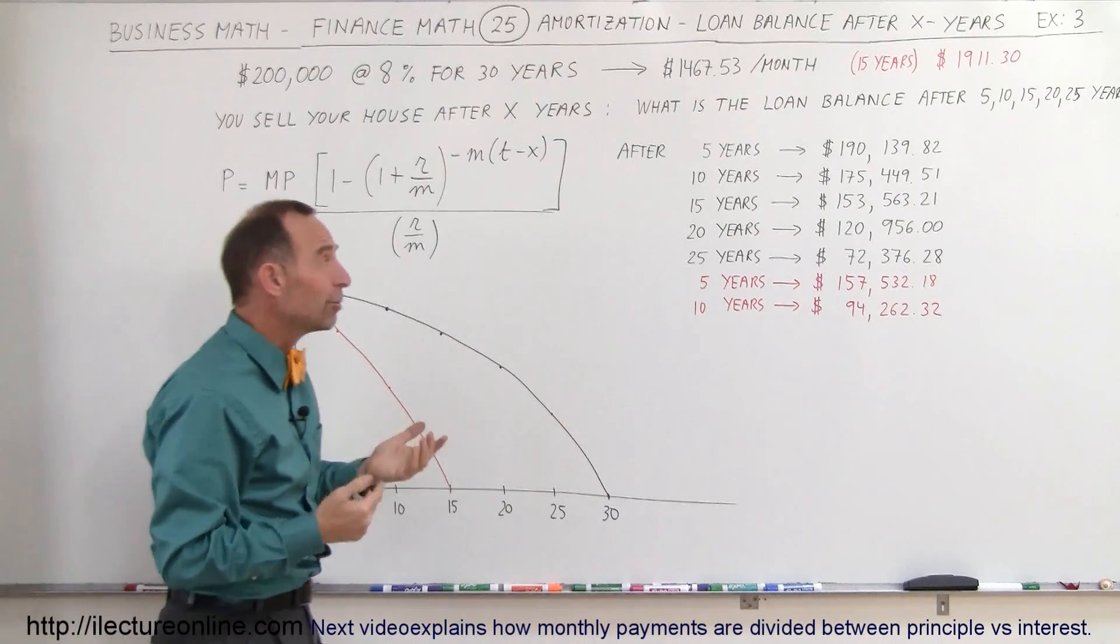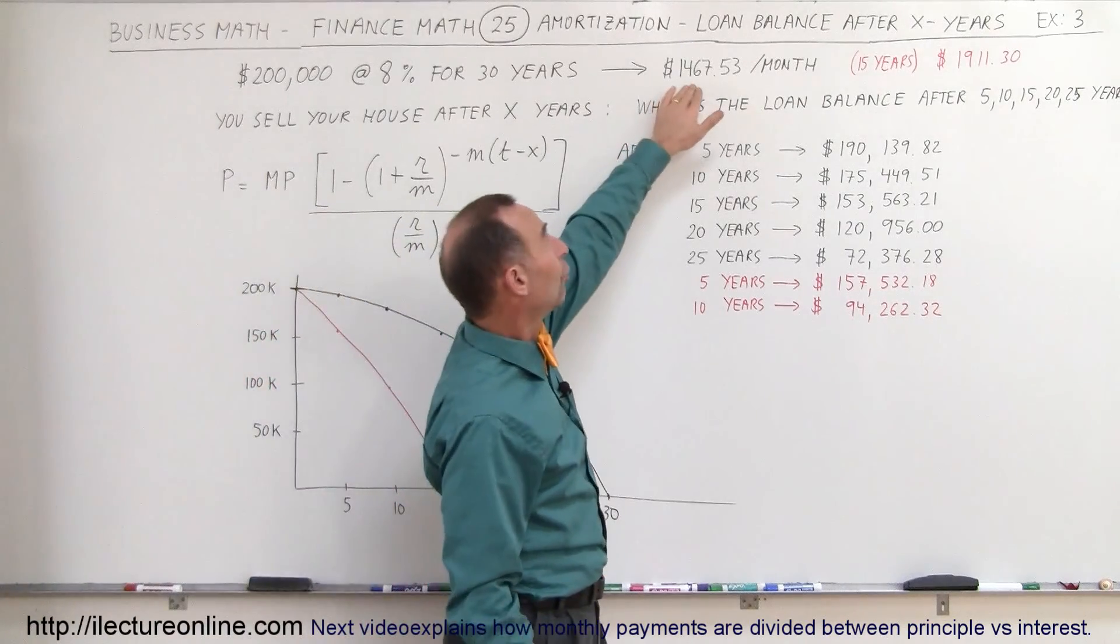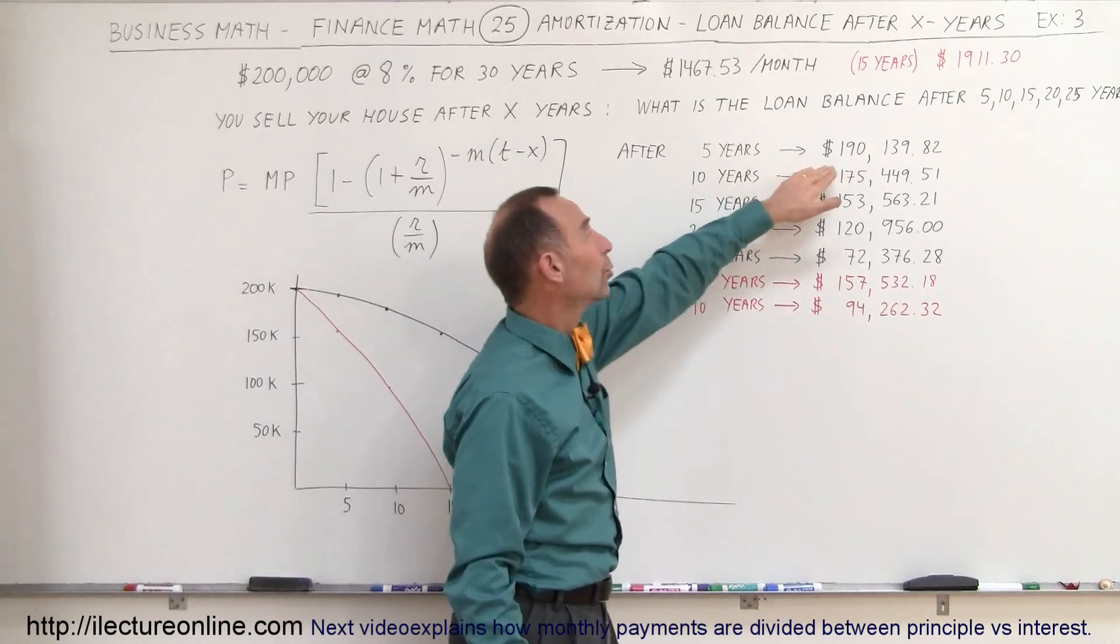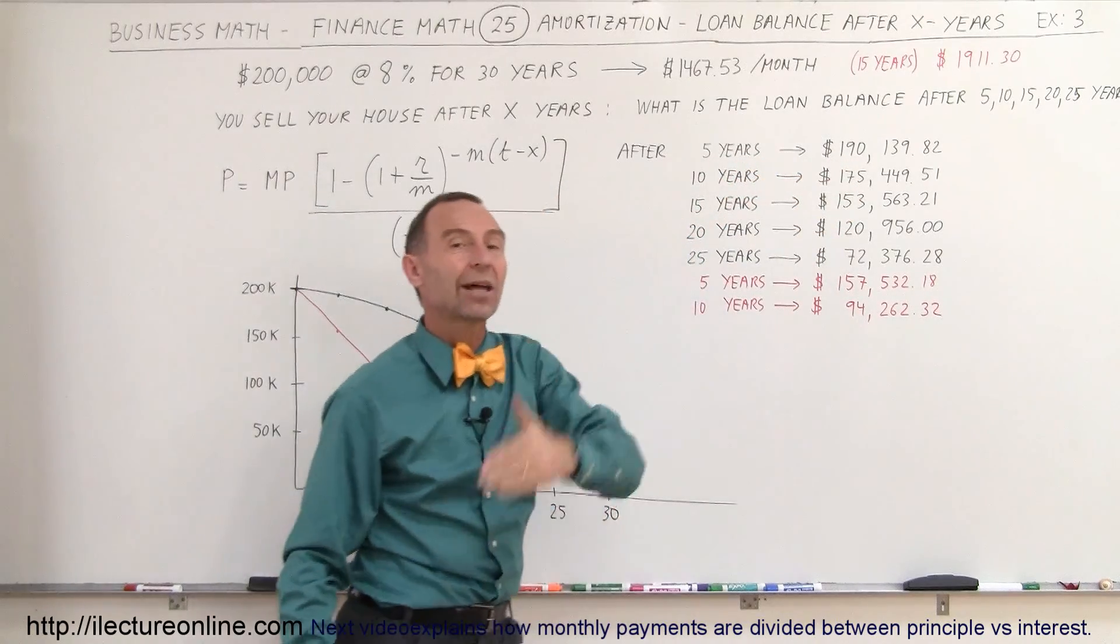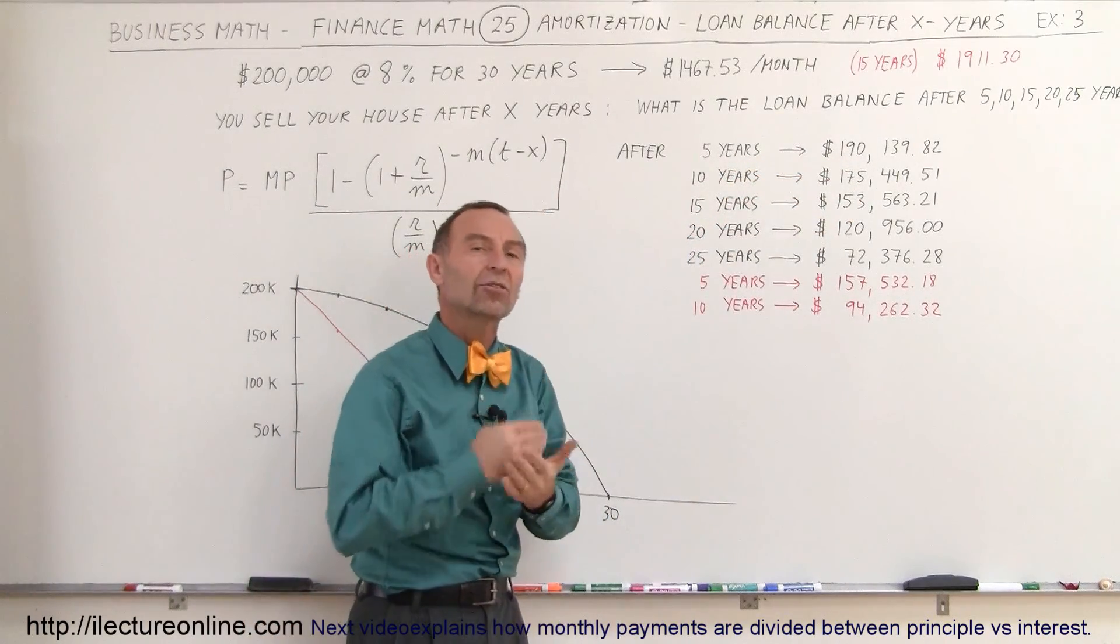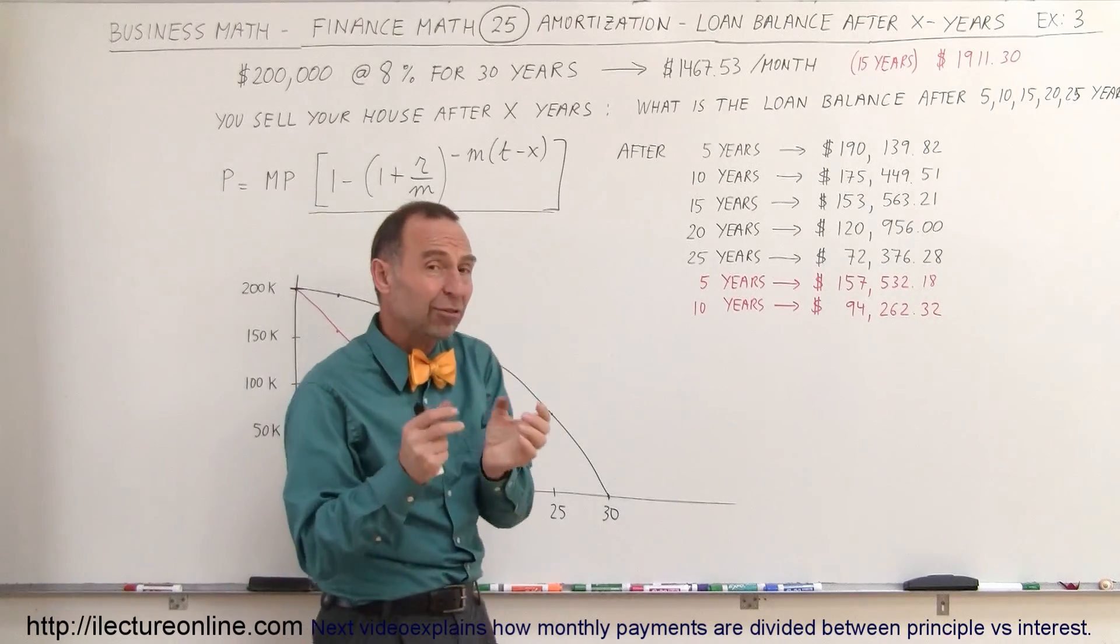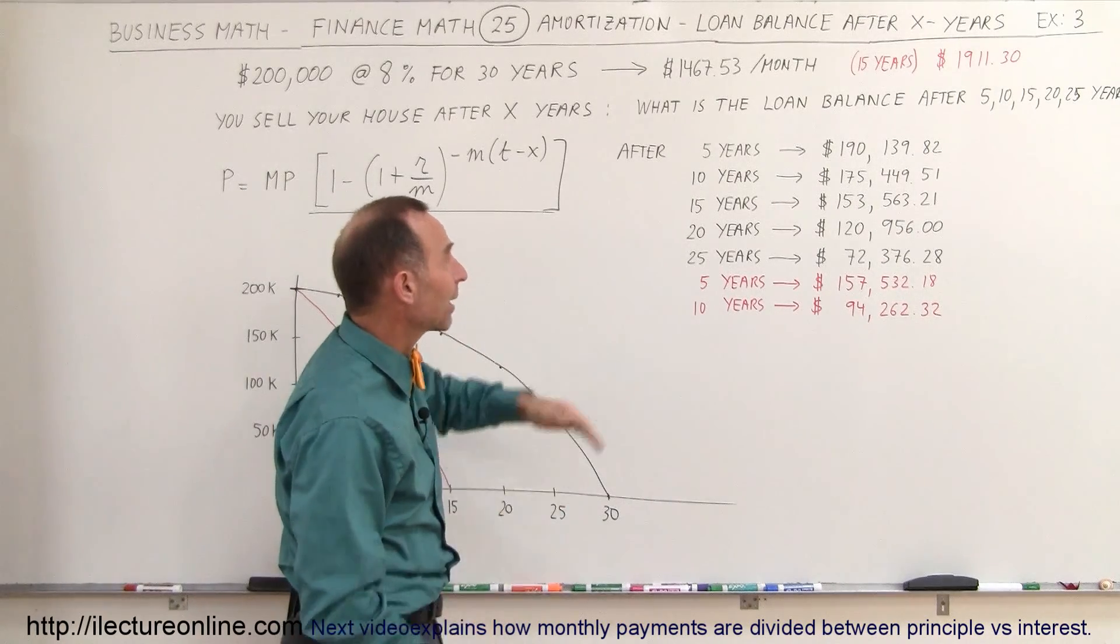So after making payments for 5 years, over $88,000 in payments, you will still owe $190,000 of the original $200,000 loan to the bank. The vast majority will have gone to paying interest to the bank.